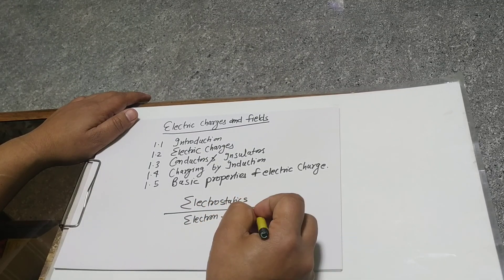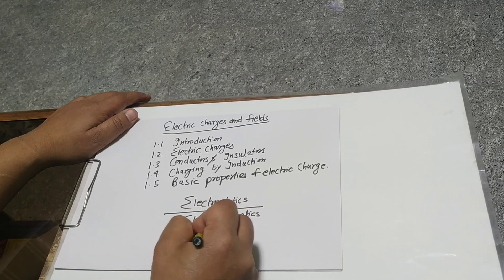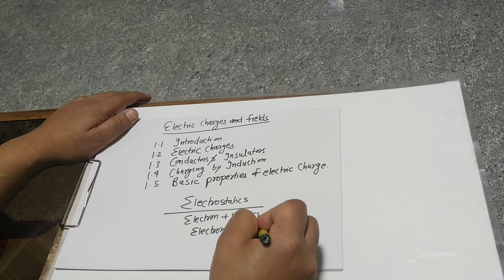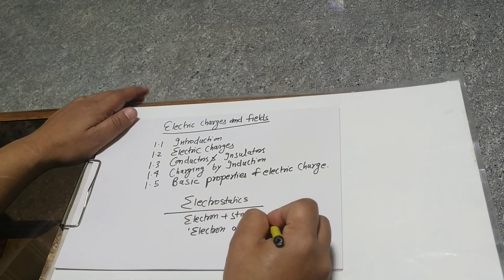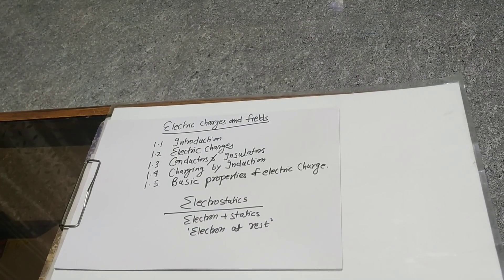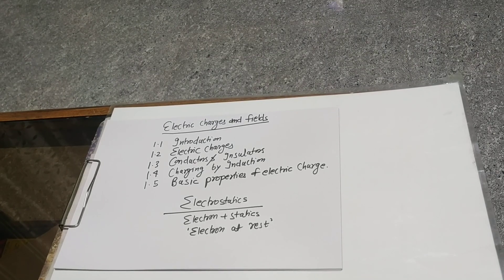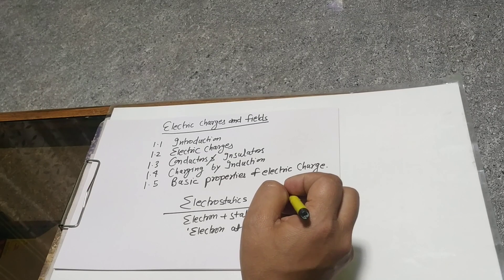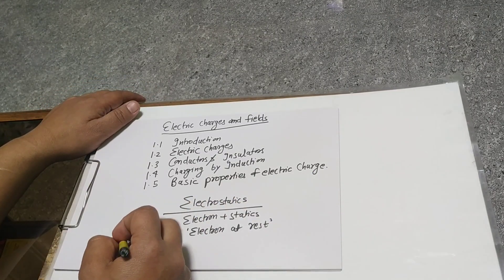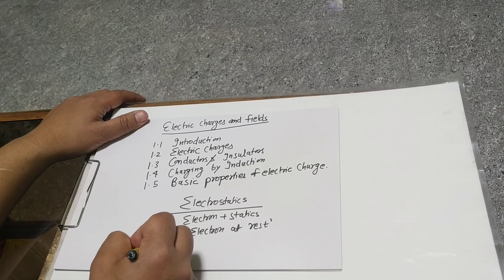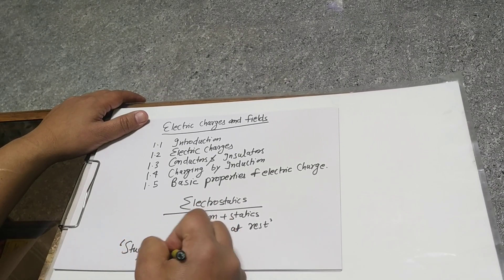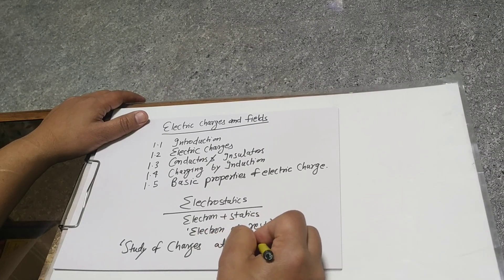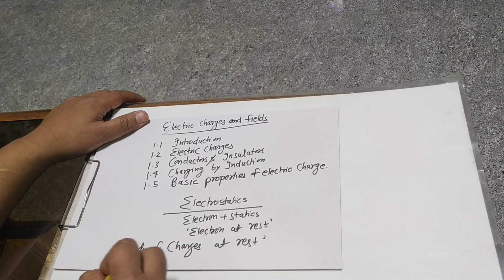So that means electron at rest — charges at rest. Electrostatics is basically the field in which we study about the forces, fields, and potential arising due to static charges. That means it is the study of charges at rest.